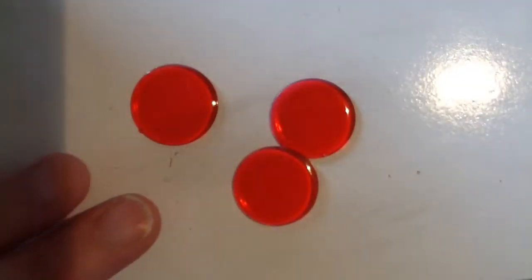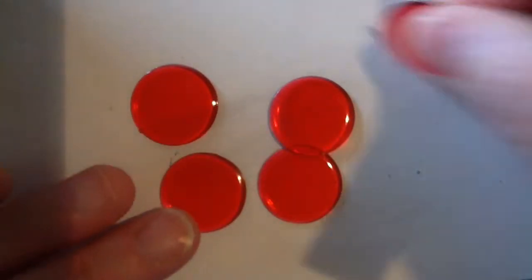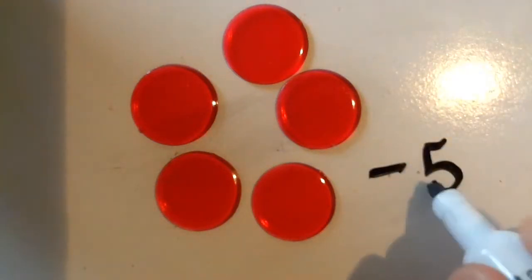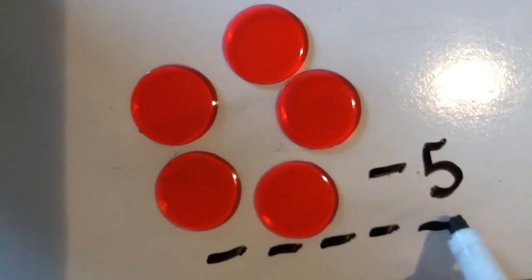Five reds would represent negative five or one, two, three, four, five negatives. Either way would work.